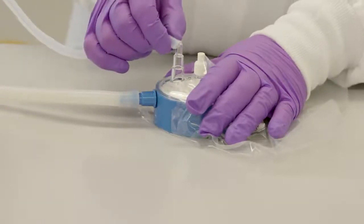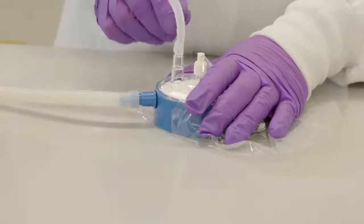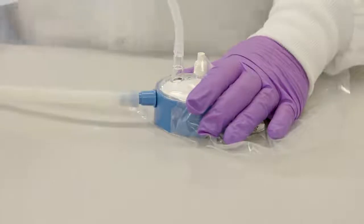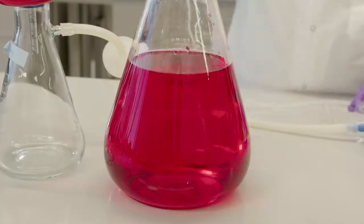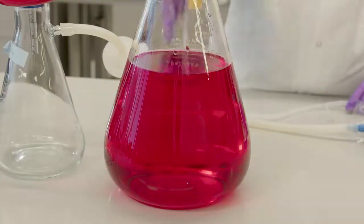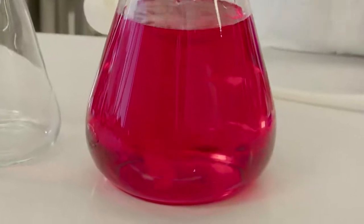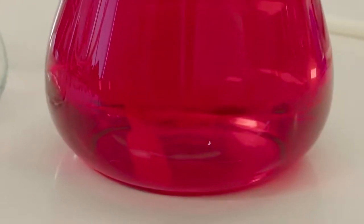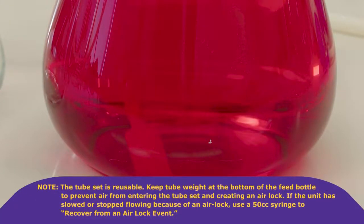Connect the feed tube to the barbed fitting marked inlet on the clear dome top of the device. Place the other end of the tube into the solution you want to filter with the tube weight at the bottom of the feeder container. The tube set is reusable. Keep the tube weight at the bottom of the feed bottle to prevent air from entering the tube set and creating an airlock.